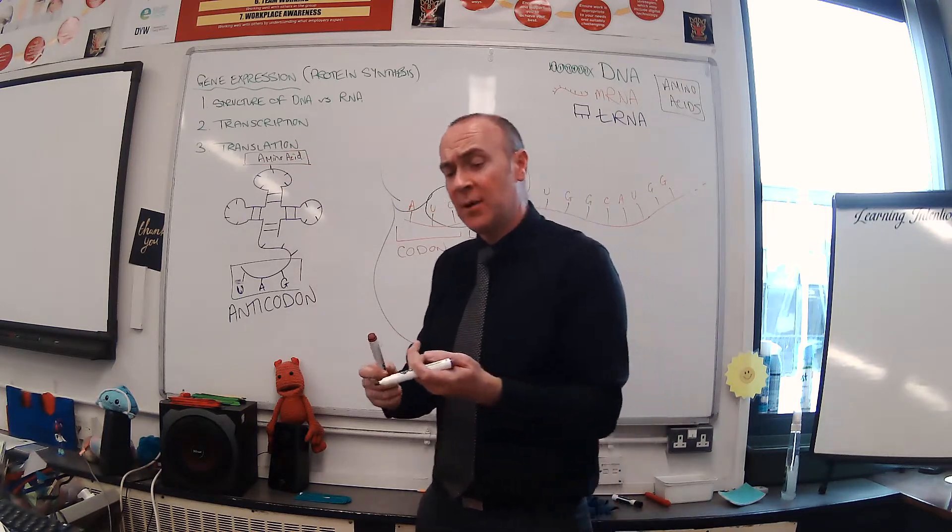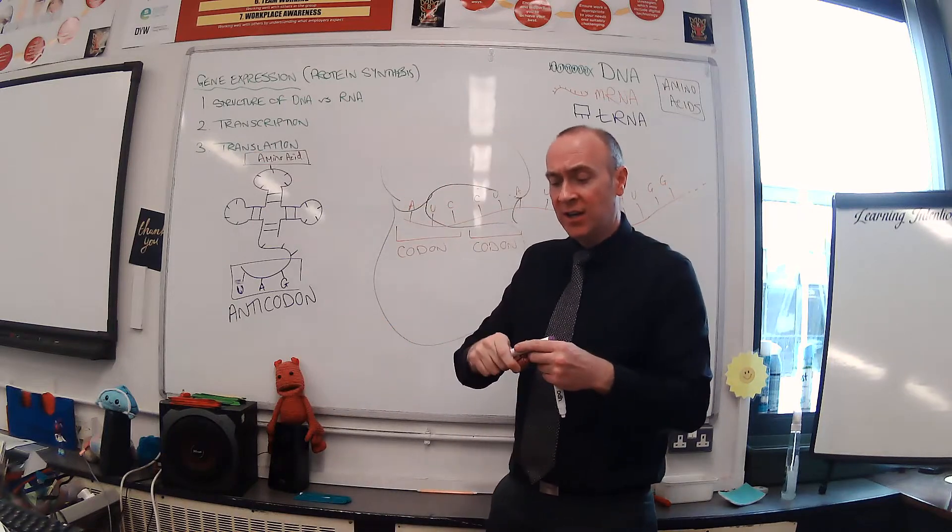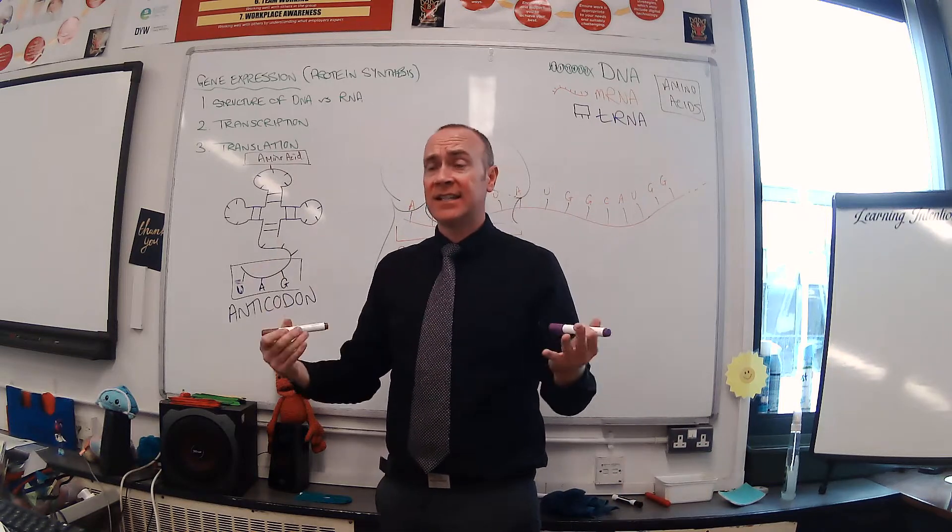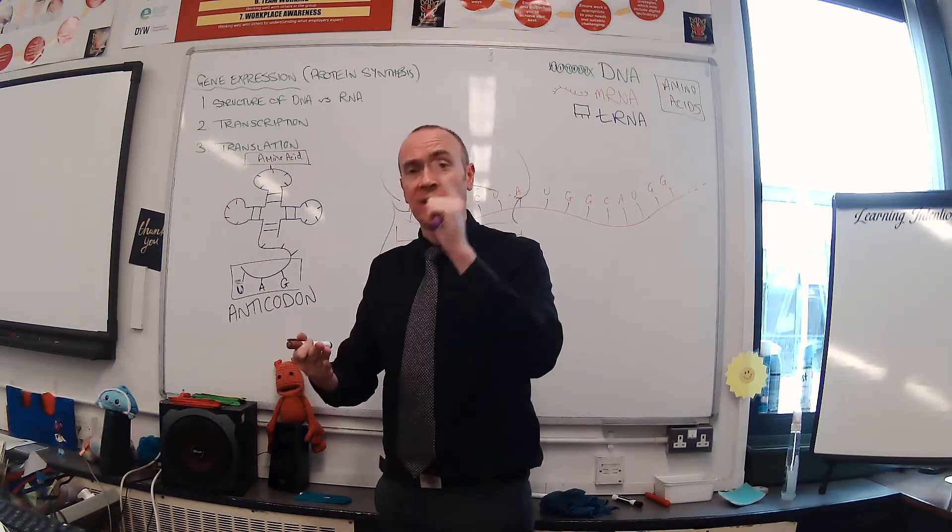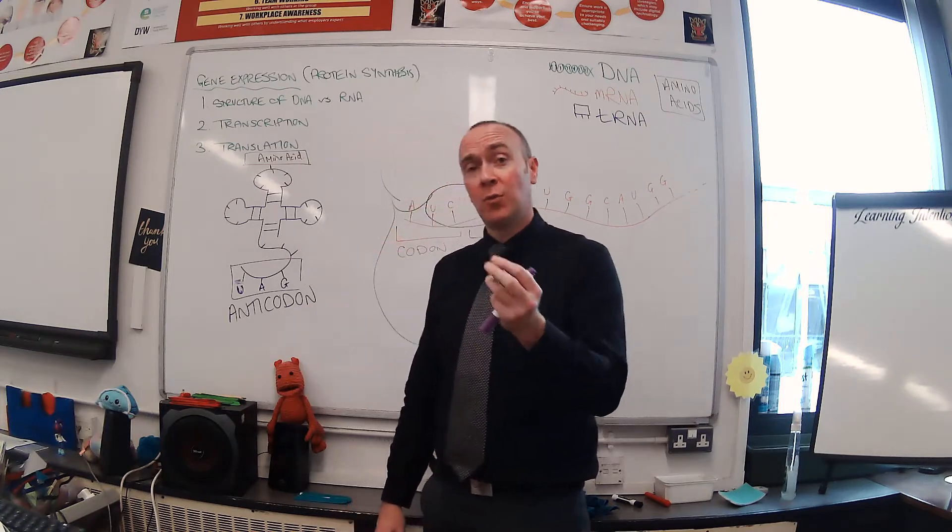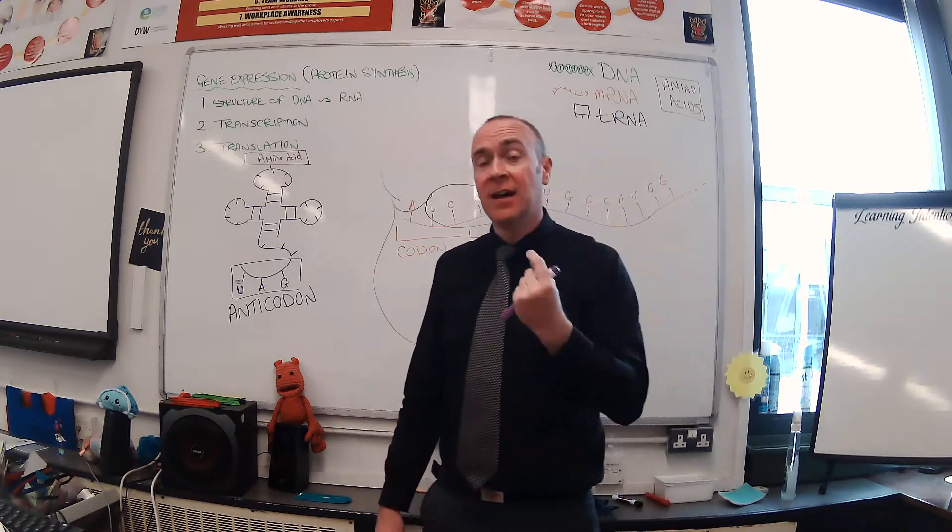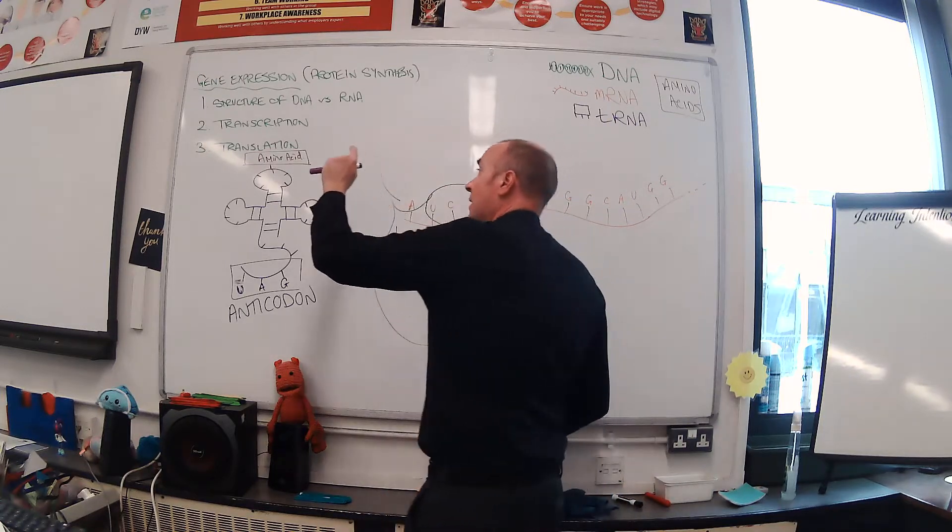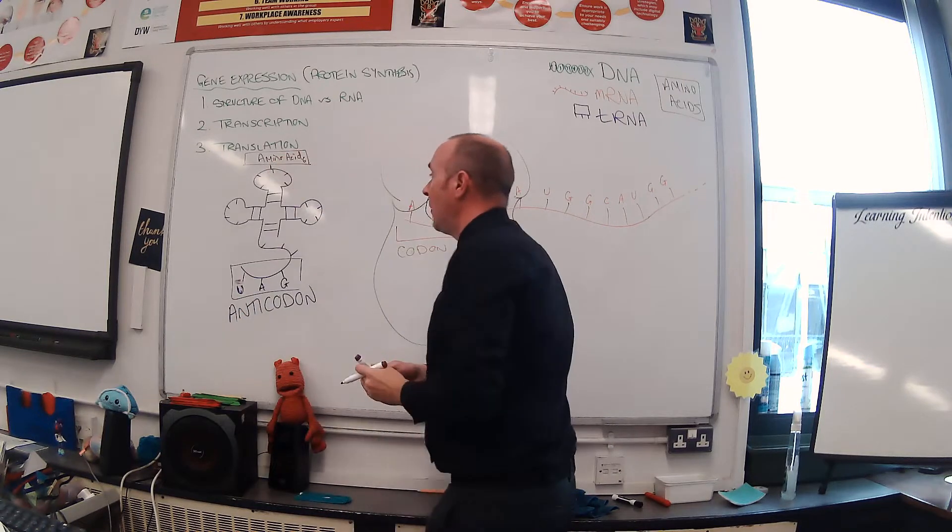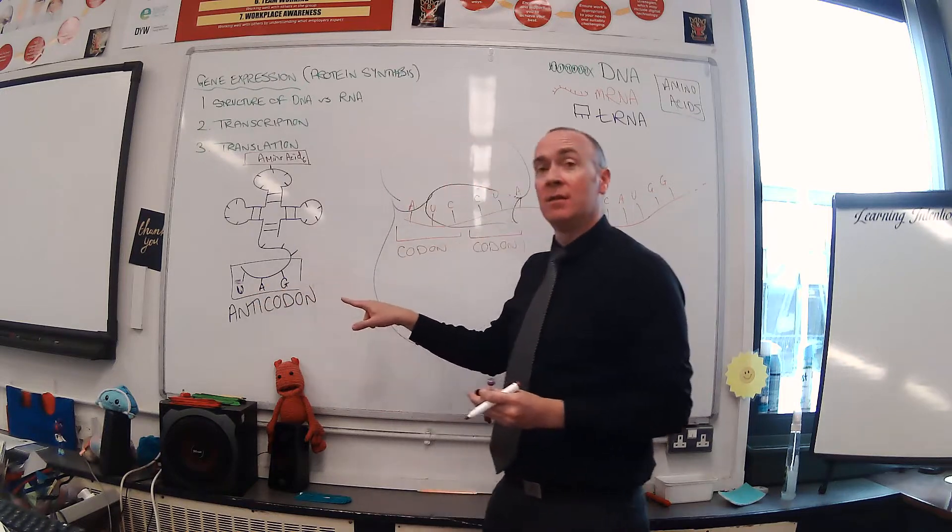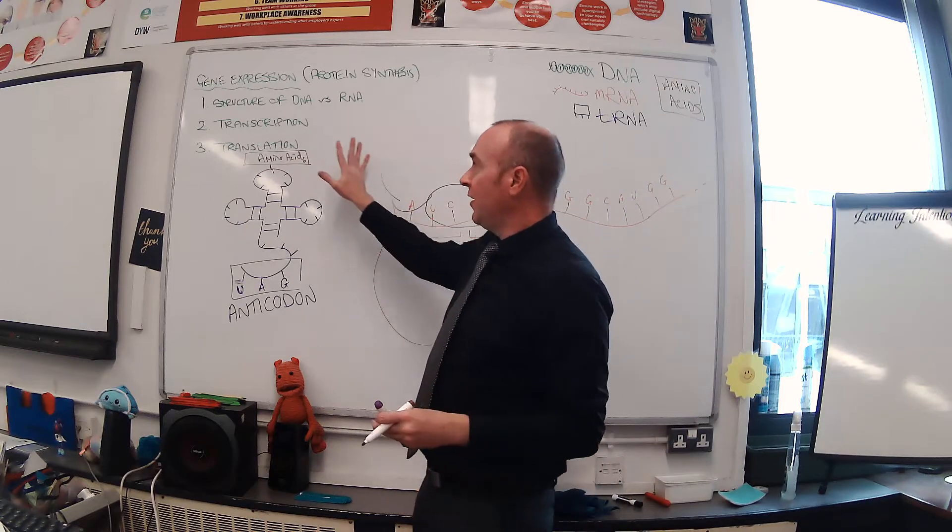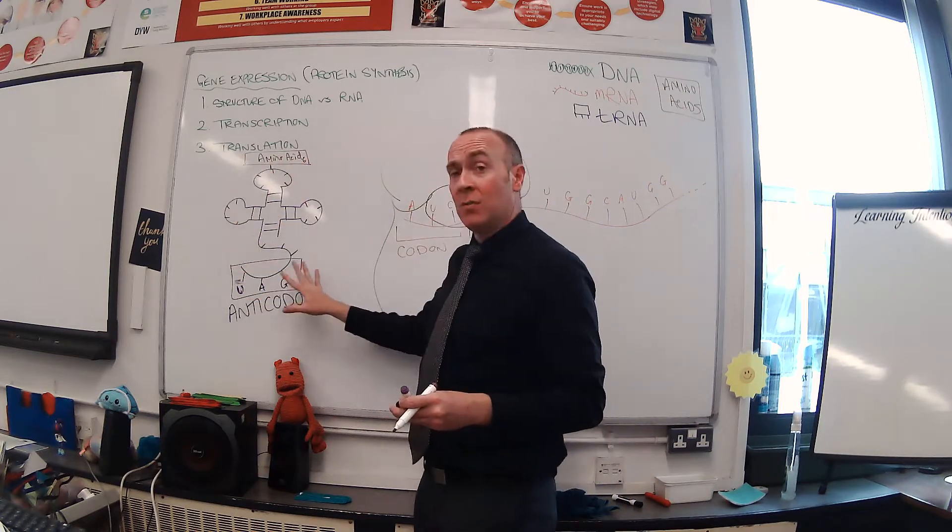When I say specific, I mean that whatever this anticodon is—let's say that is UAG—that anticodon is going to be specific for whatever amino acid that is. There are about 20 different amino acids. Those 20 amino acids can combine in a myriad of different combinations to give us every protein that exists in the living world.